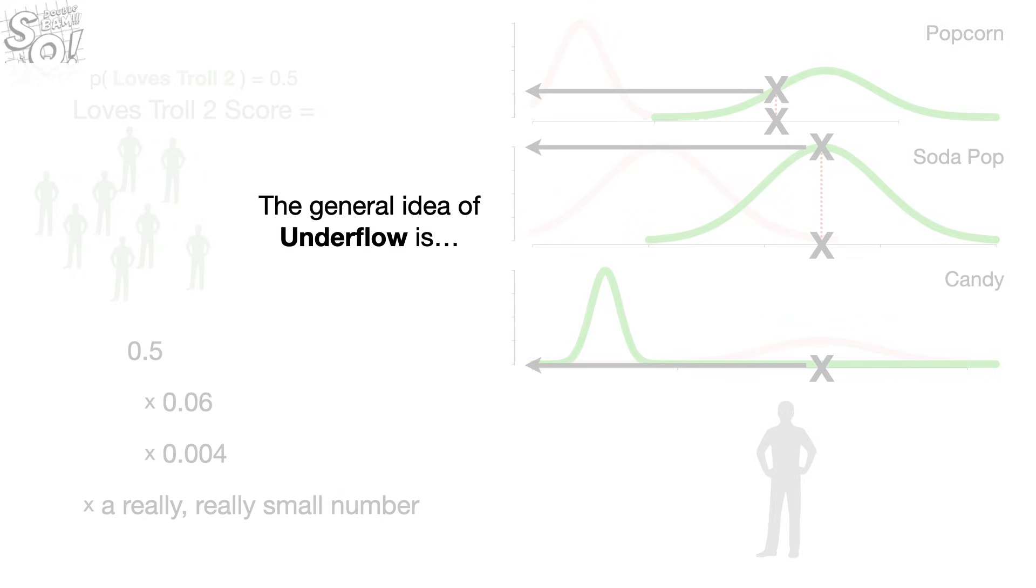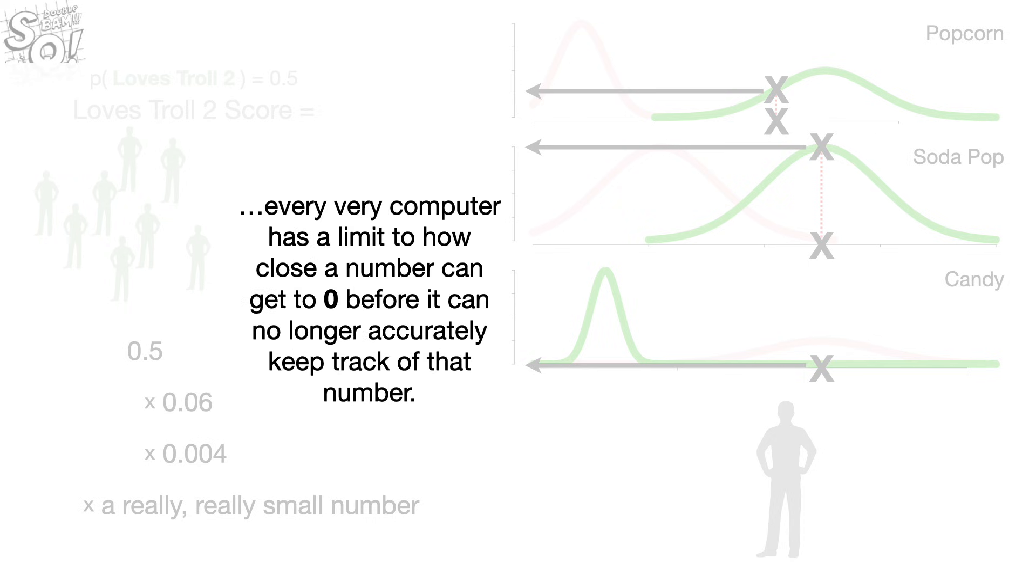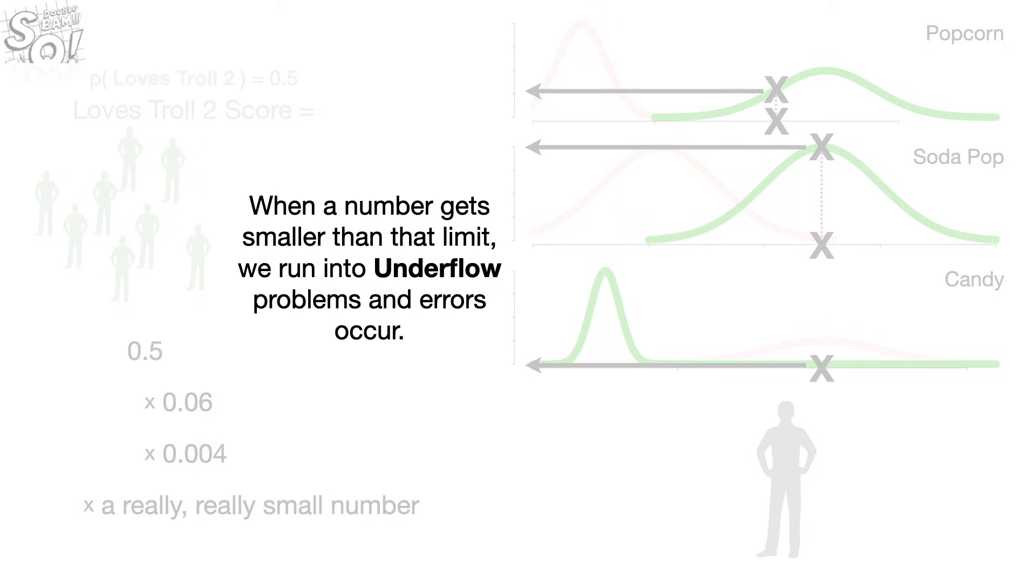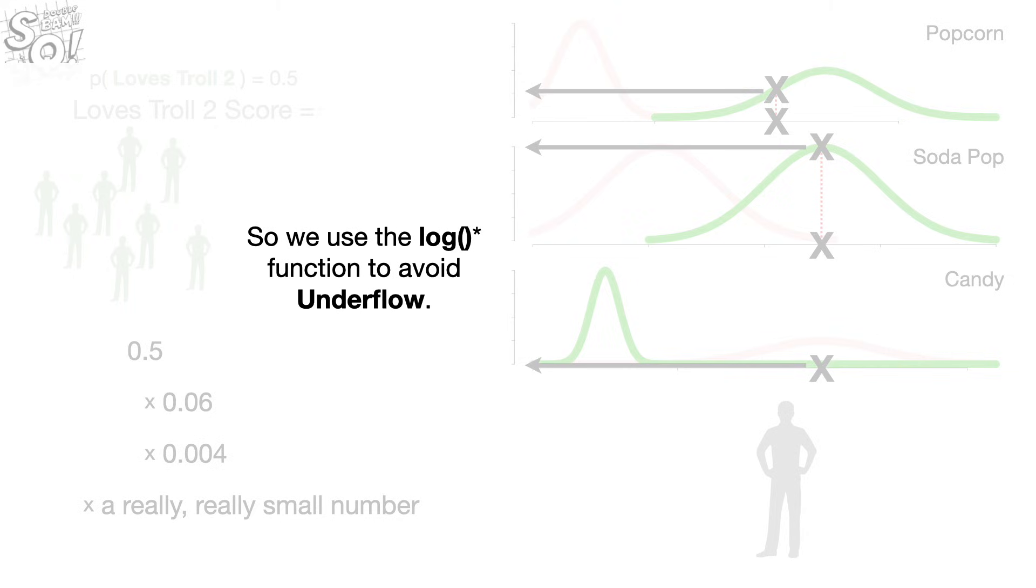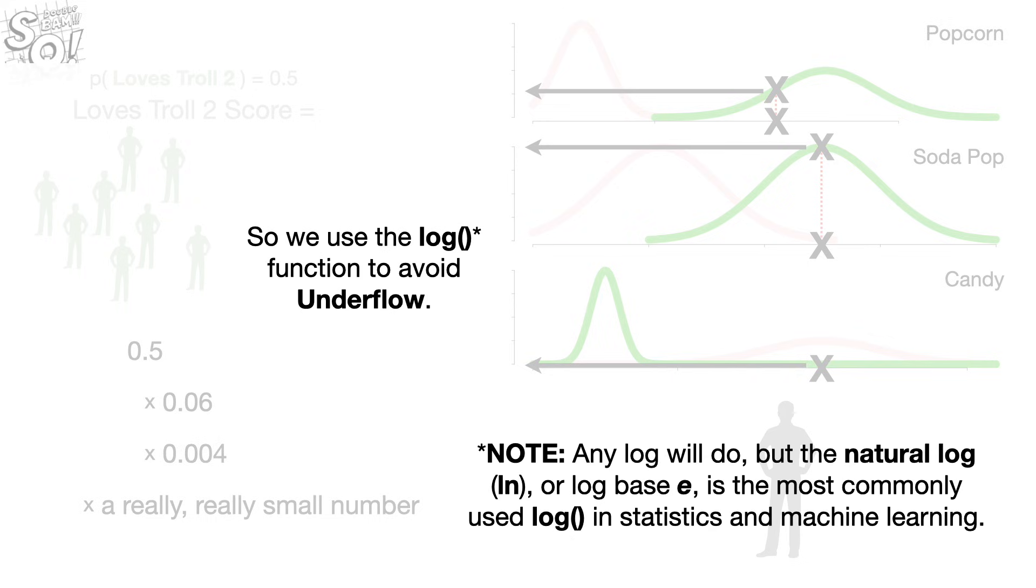The general idea of underflow is every computer has a limit to how close a number can get to 0 before it can no longer accurately keep track of that number. When a number gets smaller than that limit, we run into underflow problems and errors occur. So we use the log function to avoid underflow. Note, any log will do, but the natural log, or log base E, is the most commonly used log in statistics and machine learning.